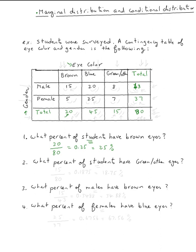Next question: what percent of students have green or other eyes? Again, the number of students goes in the denominator, so it's 80. We need to know how many have green or other eyes — that's 15. So it's 15 over 80, which gives 0.1875, or 18.75%.